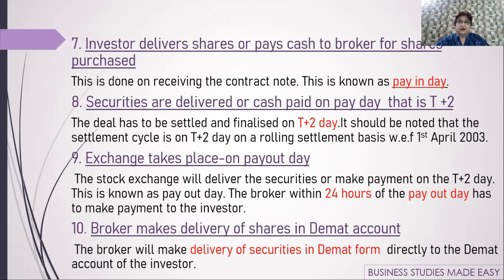Step 9: The stock exchange releases the shares — the 80 shares — to the broker once the money is received. Step 10: Within 24 hours, the broker transfers those shares into the investor's DMAT account. The broker cannot hold the shares; they must be deposited immediately. This completes the trading procedure, which is very similar to the process of online shopping.